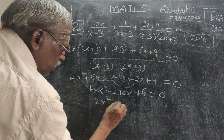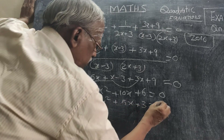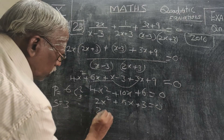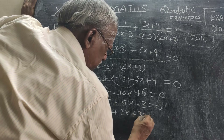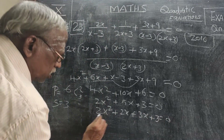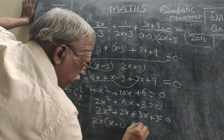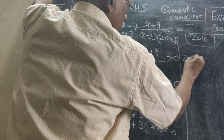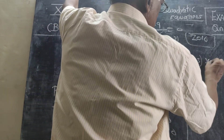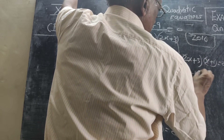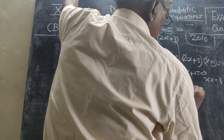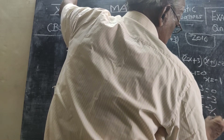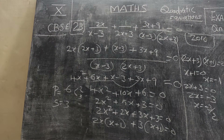Simplifying: 4x² plus 6x plus 7x plus 3, then −9 plus 3 gives −6, all equal to 0. Dividing everything by 2 gives 2x² plus 5x plus 3 = 0. Product is 6, sum is 5, so split as 2x² plus 2x plus 3x plus 3. Factoring: 2x(x+1) plus 3(x+1) = (x+1)(2x+3) = 0. Therefore x = −1 or 2x = −3, giving x = −3/2.